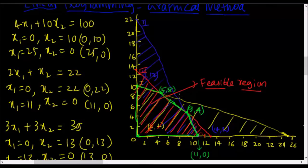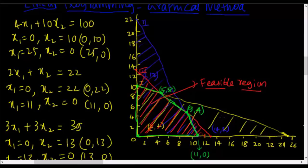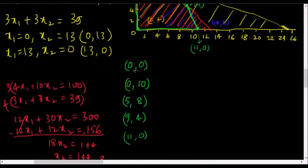The feasible region has five corner points. (0,0) and (0,10) are directly read off. The intersection of the first and third constraints, solved by simultaneous equations, gives the point (5,8). The intersection of the second and third constraints gives the point (9,4). And the last point, read directly from the graph, is (11,0).